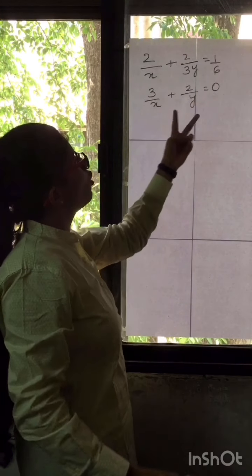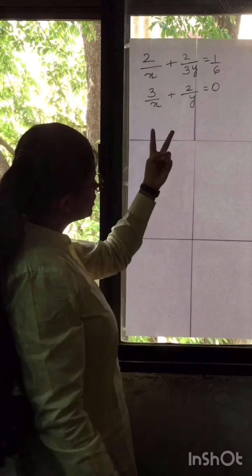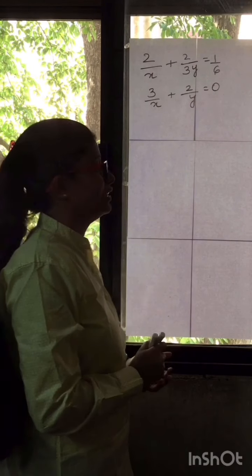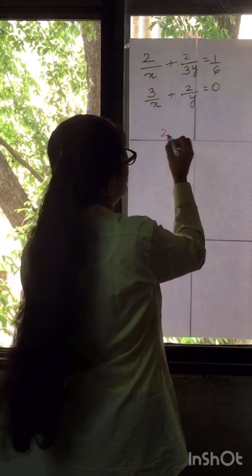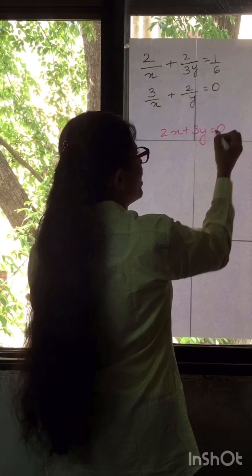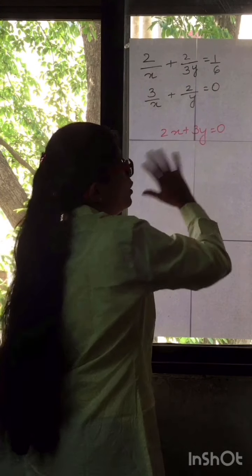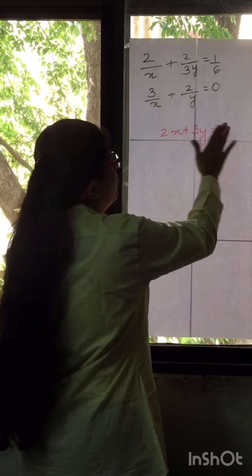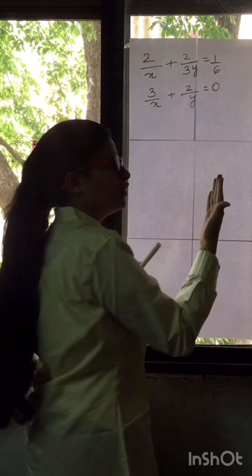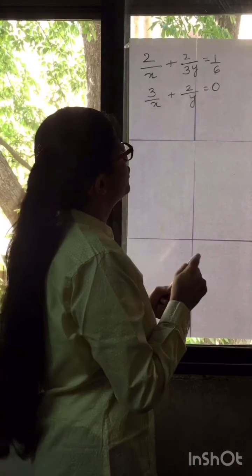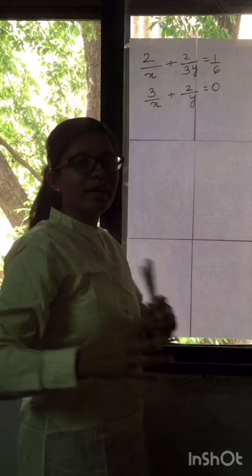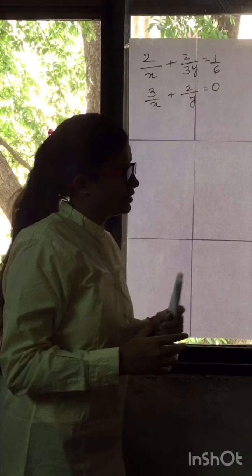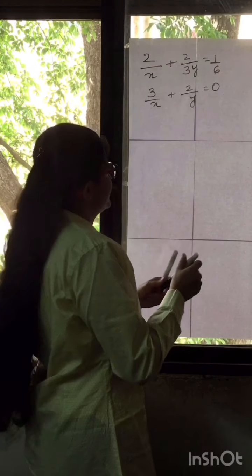Both equations have two variables x and y, but this time the variables are given in fractional form: 2 upon x plus 2 upon 3y equals 1 upon 6, and 3 upon x plus 2 upon y equals 0. Instead of a straightforward form like 2x plus 3y equals 0, the variables appear as fractions. This is the tricky part, and this type of question is frequently asked in board exams.